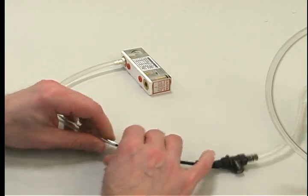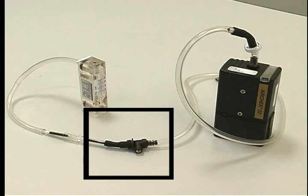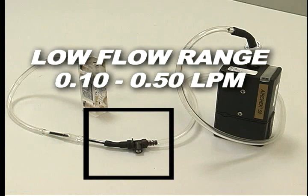Connect the rotometer to the exposed end of the back sorbent tube. This setup uses an adjustable low flow holder. This allows flow adjustments in the low flow range between 0.10 and 0.50 liters per minute.